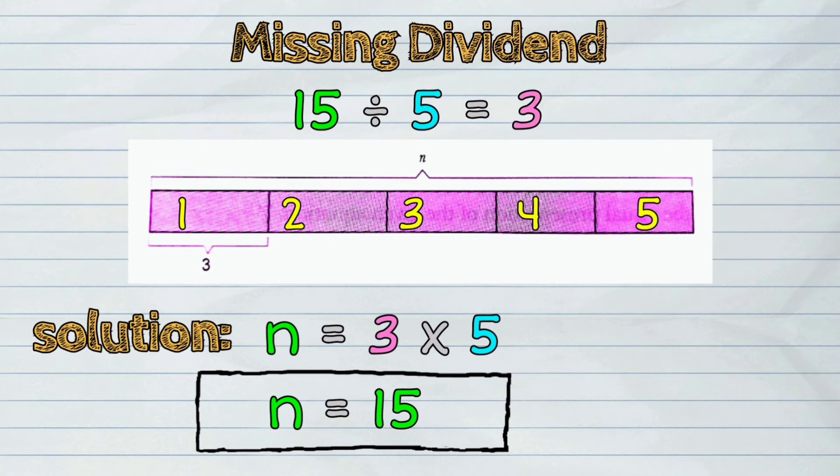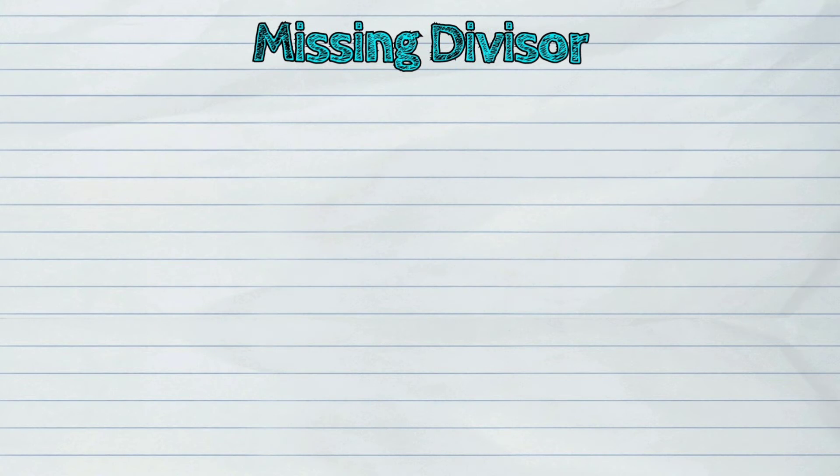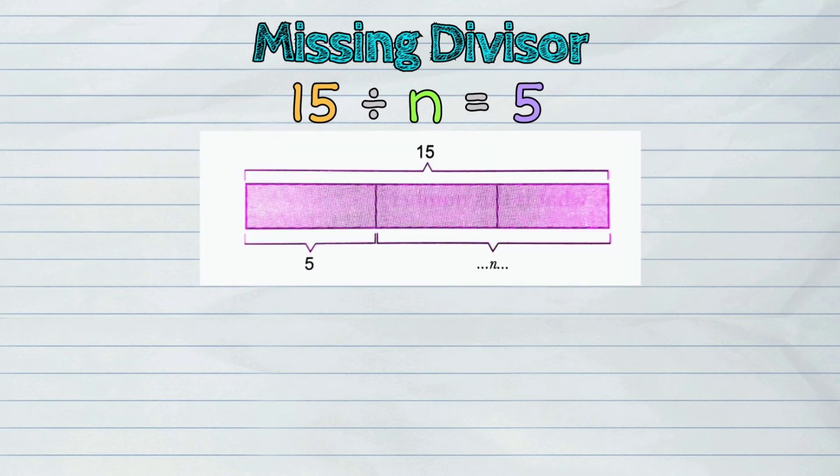But how about if the divisor is the one missing in the equation? Let's take this example: 15 divided by n equals 5. We will refer again to the visual representation.